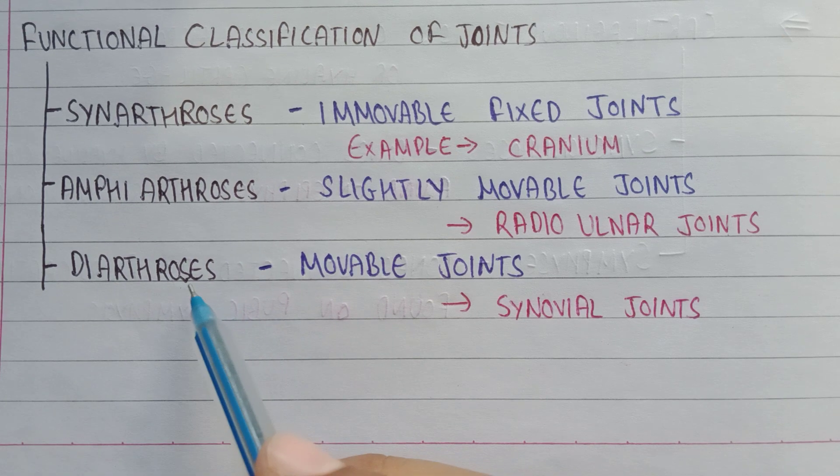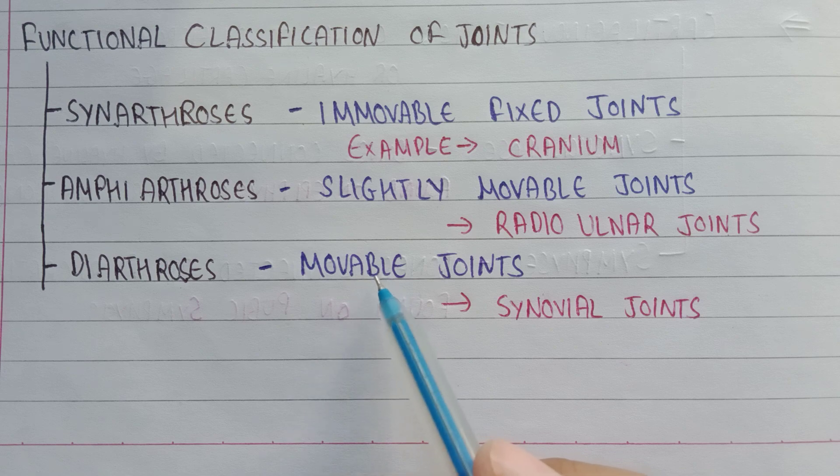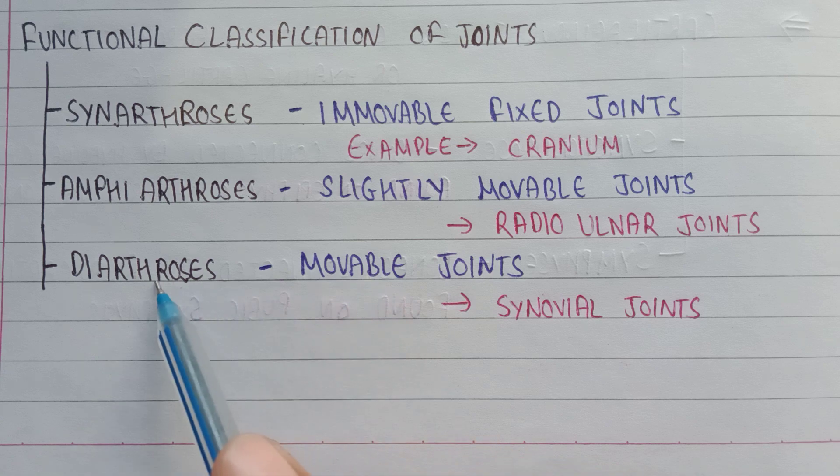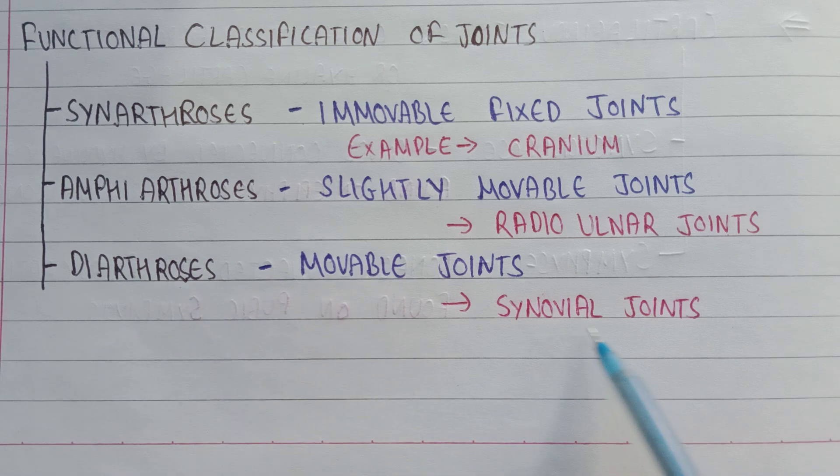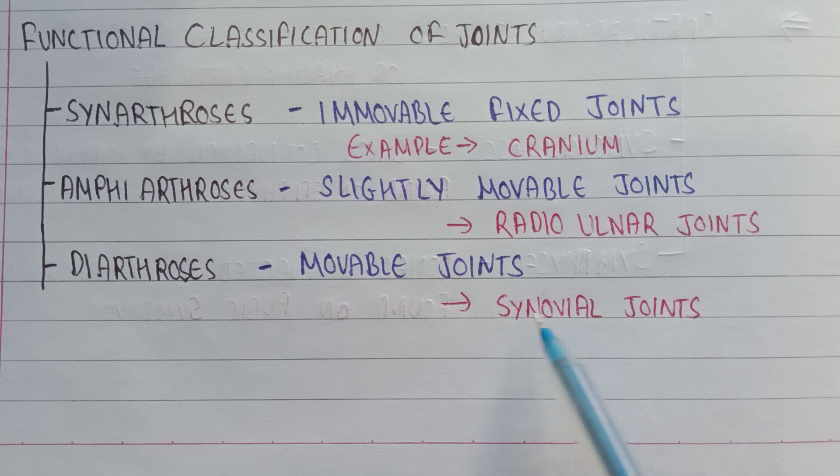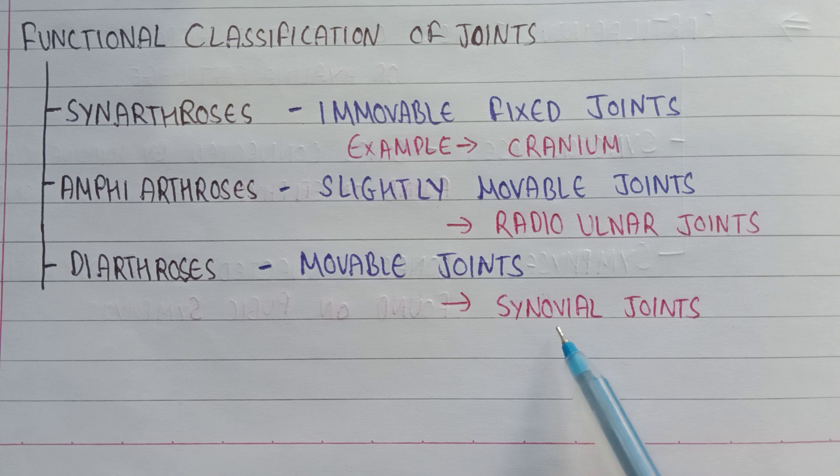Diarthrosis are the movable joints which show a variety of movement in a range of variety of movement. An example of diarthrosis is synovial joints. In synovial joints, there is a fluid-filled cavity, a synovial cavity which has fluid.